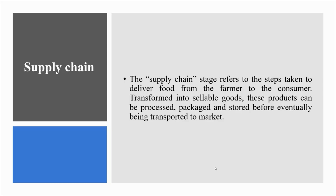The supply chain stage refers to the steps taken to deliver food from the farmer to the consumer. Transforming into sellable goods, products can be processed, packaged and stored before eventually being transported to market. Post-harvest food loss is an especially important issue across the developing world, where the infrastructure, energy grids and transport systems are often poor or missing. In these countries, more than 40% of food losses occur post-harvest and during processing.